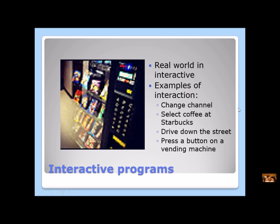Here are some examples of our interactions. We can change the channel of the TV. When we go to Starbucks, you can select what type of coffee you want. You interact with people every time you drive down the street — sometimes you have to stop or go at a light. And there are simple interactions with machines, like pressing the button on a vending machine. The machine doesn't do anything until you tell it to.